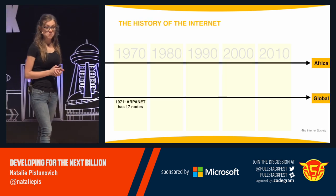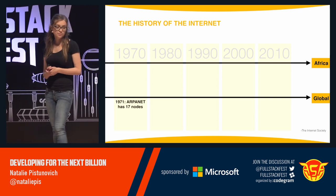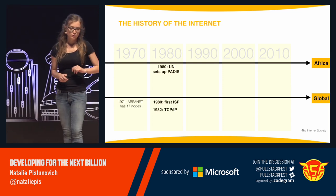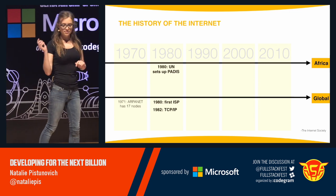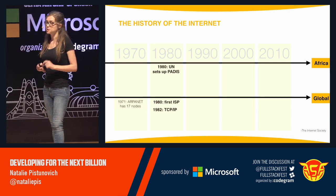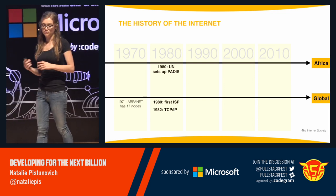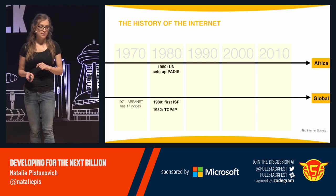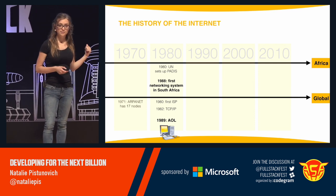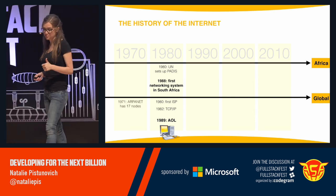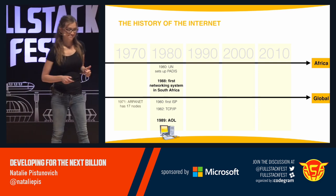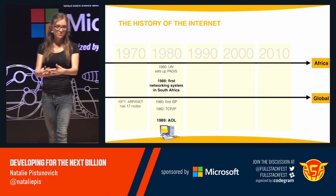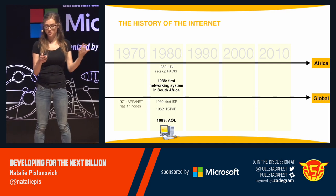In the 70s, nothing interesting was going on in Africa, while globally the US military had 17 nodes communicating between them. In the first half of the 80s, the UN set up a dedicated organization to bring internet to Africa, while globally the first ISP was being set up and TCP/IP protocol was announced. In the second half of the 80s, we got the desktop — and your mom started yelling 'Get off the internet, I need to call your aunt!' There was AOL, things connected, while in Africa the first networking system in South Africa showed up.